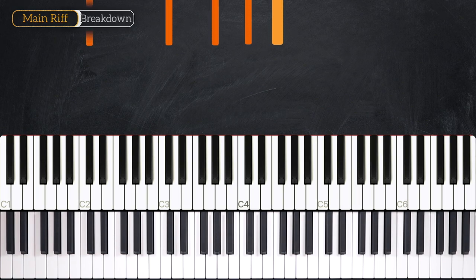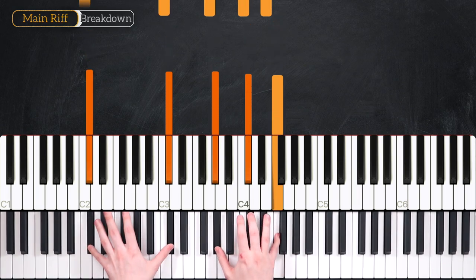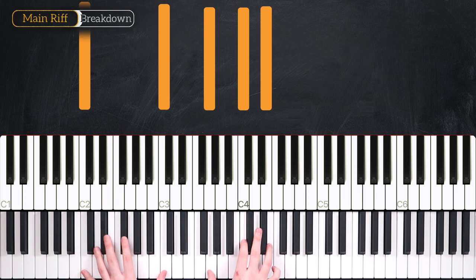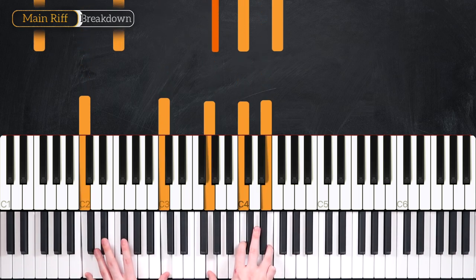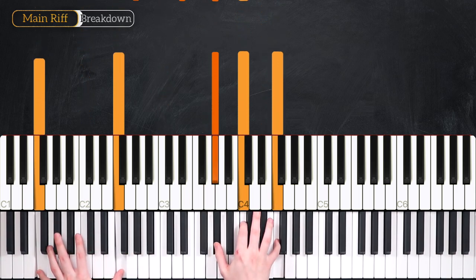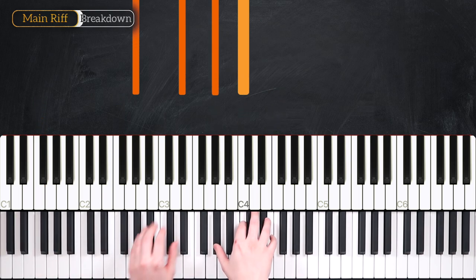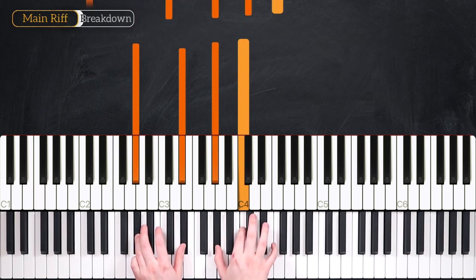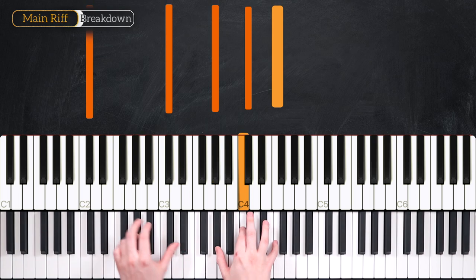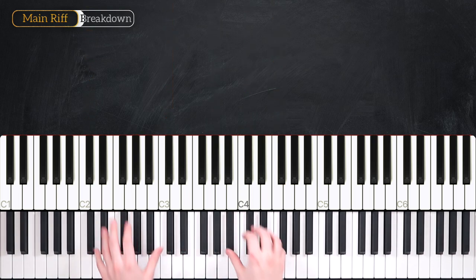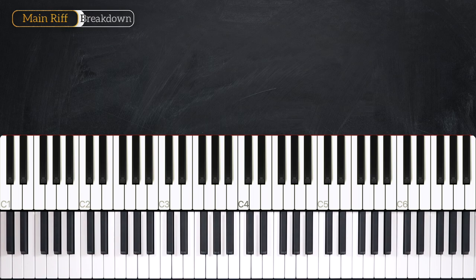Okay, so just to recap, we have our Db major chord, our C major, our F minor, our Ab major chord, which then leads us back into a Db major chord, ready to start the loop all over again.